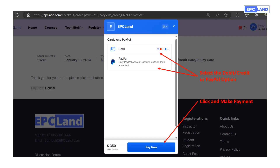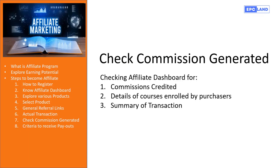On the payment gateway the purchaser can select cards or PayPal and click to pay for that particular course. We have done an actual transaction from a dummy account and purchased a course. The course has been processed from admin login. Now let us see what is happening in the commissions dashboard — whether the commissions have been credited and what the transaction summary looks like.